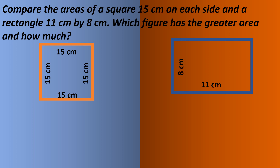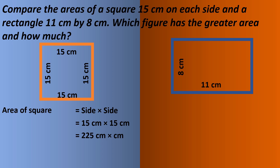First we find the area of the square. The formula is side into side. Putting the values: 15 centimeters into 15 centimeters equals 225 centimeter squared. We can write this as 225 square centimeters or 225 centimeter square.